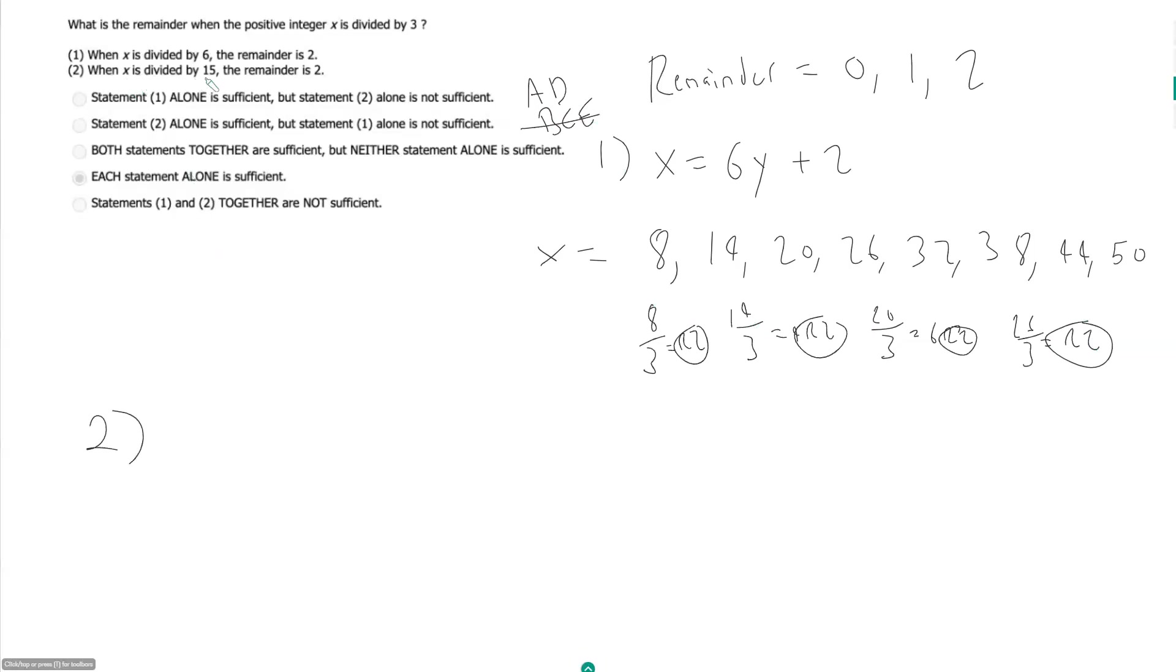When x is divided by 15, the remainder is 2. So what is that saying? That is saying x is equal to 15 times some other quotient. We'll call it z, z here plus 2. So according to this,